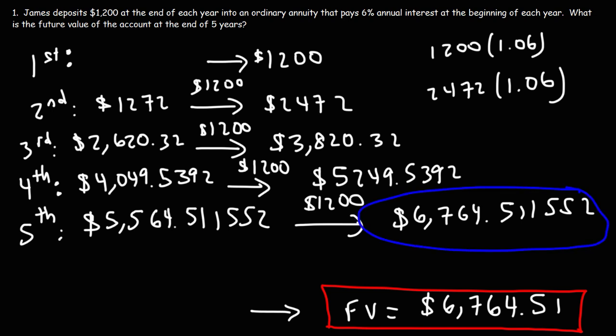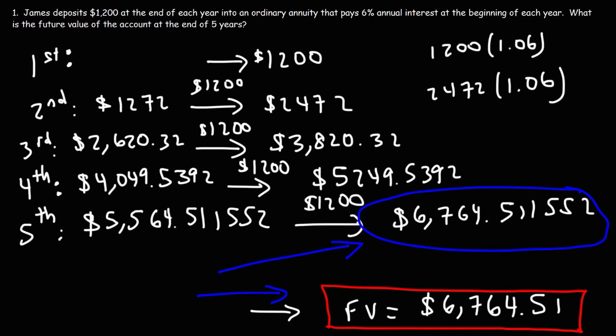Now you can see from a step-by-step process how this number is calculated. You can use this tedious method to understand how the answer comes about, or you can use the formula to quickly get the answer — which is very useful if you want to find out what the account is worth after 30 or 40 years, because you don't want to do this 30 or 40 times. The formula is very time-saving when calculating the future value of an ordinary annuity or an annuity due over a very long time period.